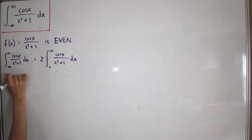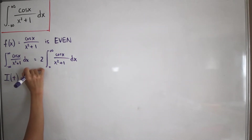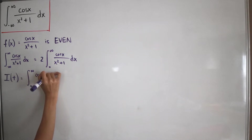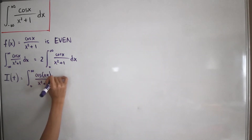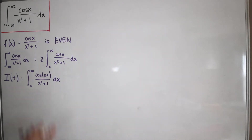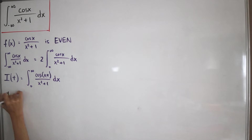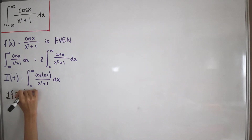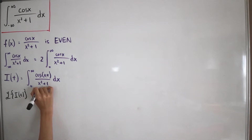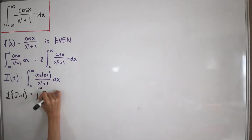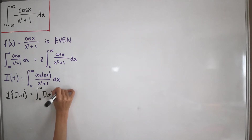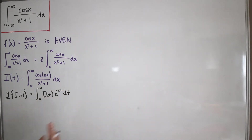Let's define a function — call it capital I of t — as the integral from zero to infinity of cosine of xt divided by x squared plus one, dx. Now we take the Laplace transform of I(t). By the definition of the Laplace transform, the Laplace transform of I(t) is the improper integral from zero to infinity of I(t) multiplied by e to the negative s times t, where s is a form of frequency as you'd learn in introductory differential equations.